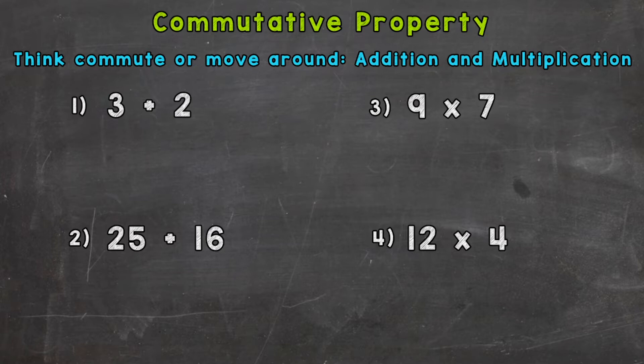Let's jump right in to number one. Number one says 3 + 2, and the commutative property states for addition that we can switch the order of those addends. Addends are the numbers that you add together to get a sum.